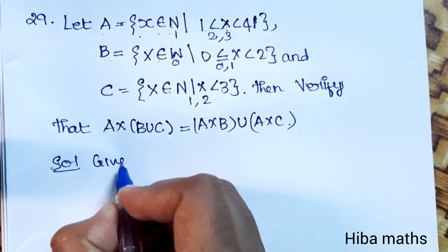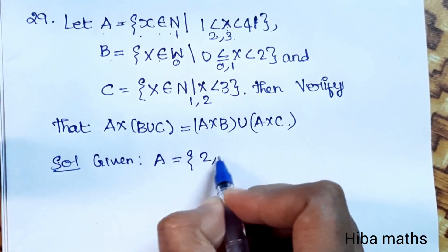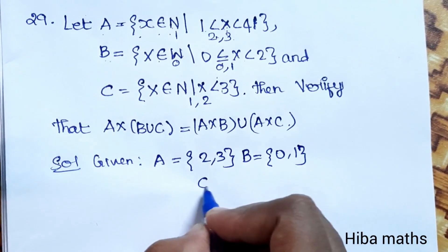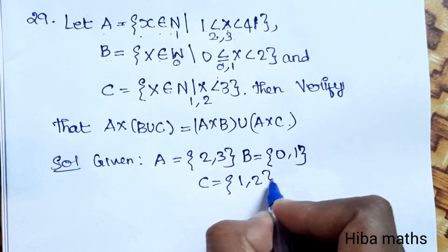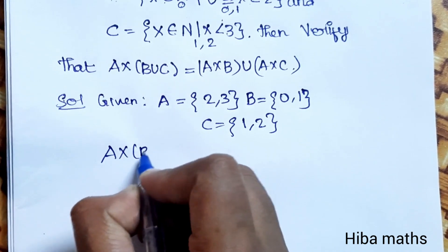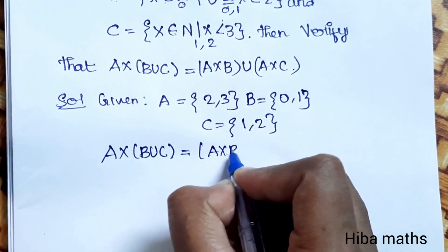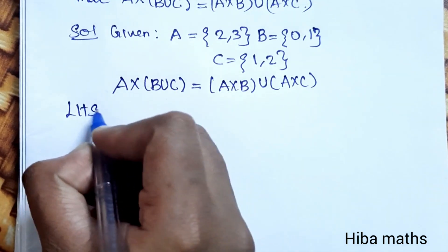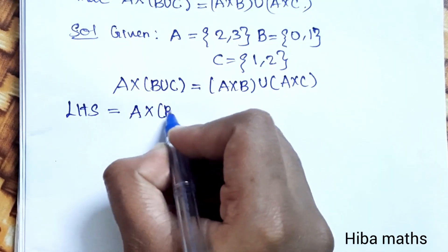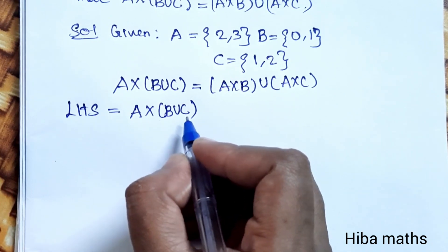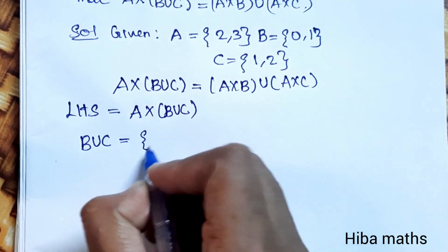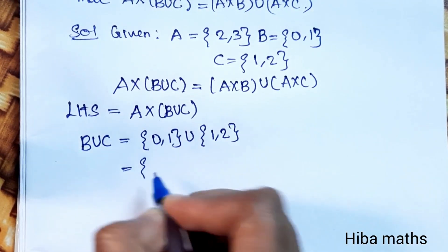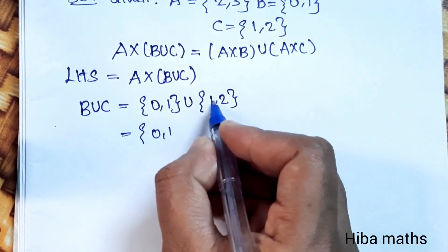Solution: Given A equals {2, 3}, B equals {0, 1}, and C equals {1, 2}. To find LHS, we first compute B union C. LHS equals A cross (B union C). First step: B union C equals {0,1} union {1,2}.